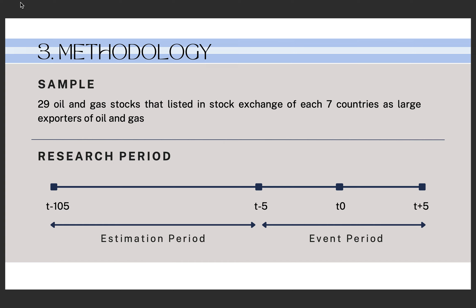Because this research is using an event study approach that examines differences before and after an event, it is necessary to have a research period. In total, the length of this research period is 111 days, divided into two parts: the estimation period and the event period.